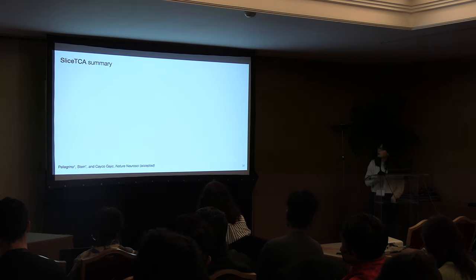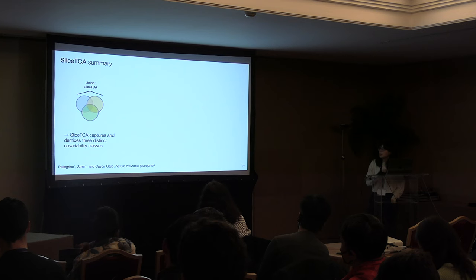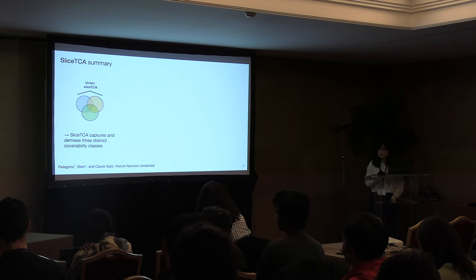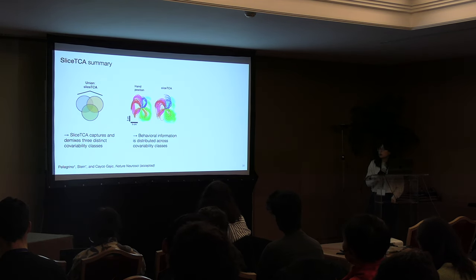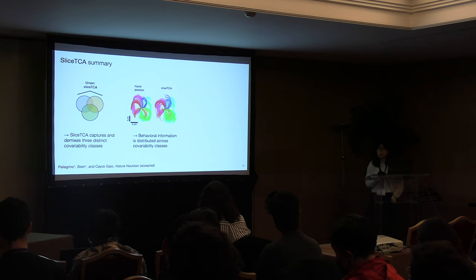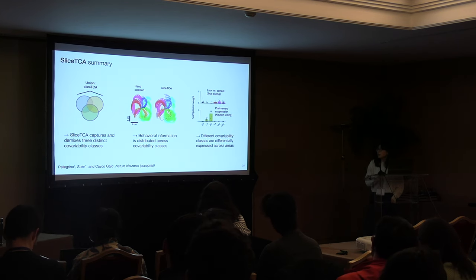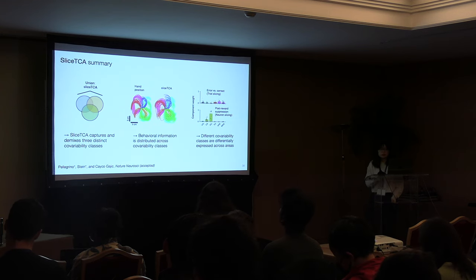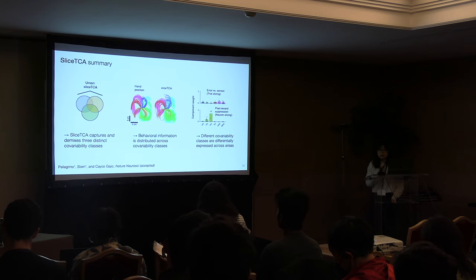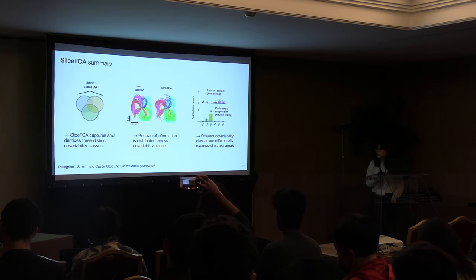To summarize: we propose slice TCA, a method that captures three different covariability classes. Behavioral information is distributed across these covariability classes — one reason to mix them. Another reason is that different brain regions seem to prefer different covariability classes, so for multi-region recordings where you want to use all data simultaneously without separating by region, demixing these covariability classes is valuable.